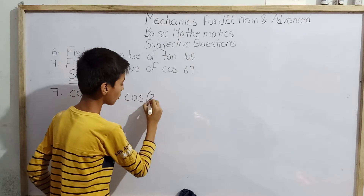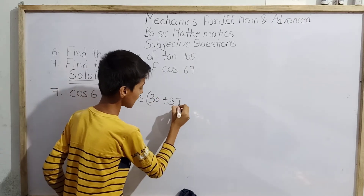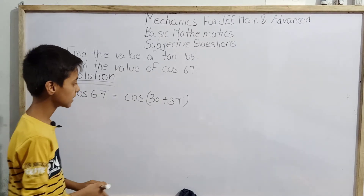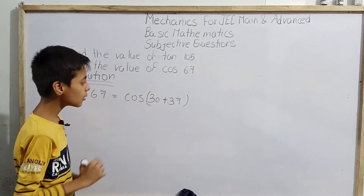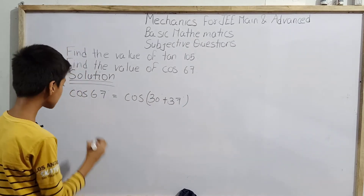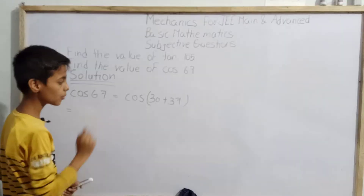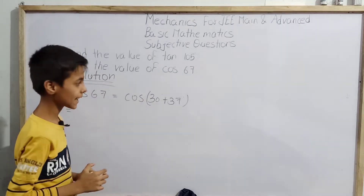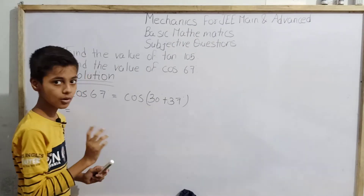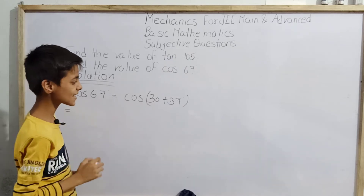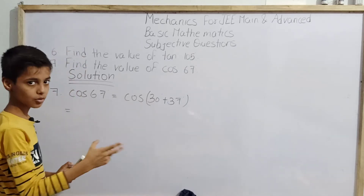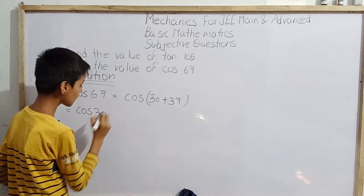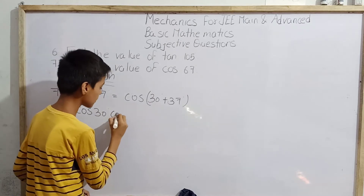How can we write cos 67°? We can write it as cos(30° + 37°). Now, by the compound angle identity, cos(a + b) = cos a · cos b − sin a · sin b. So this becomes cos 30° times cos 37°.